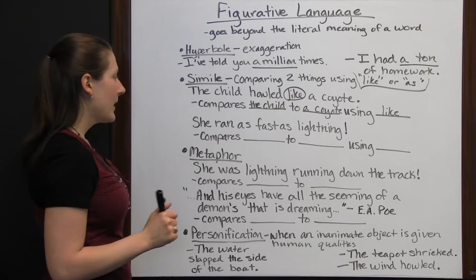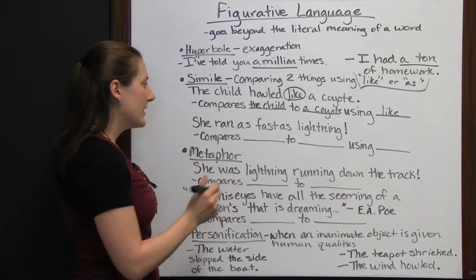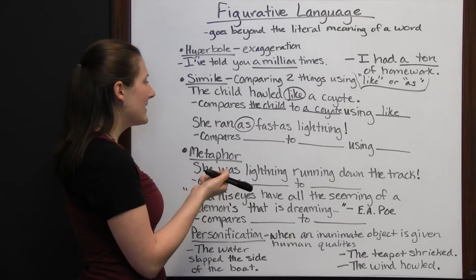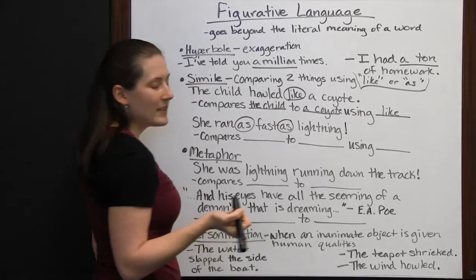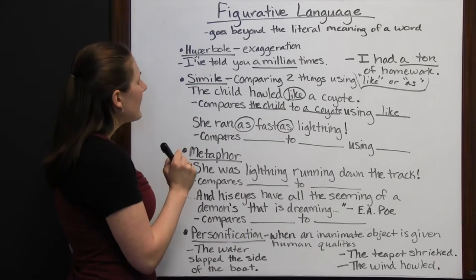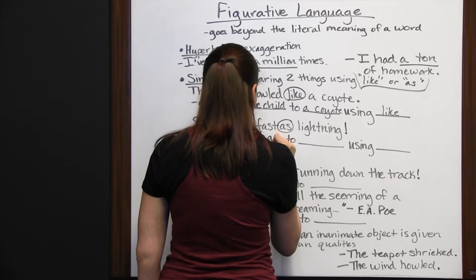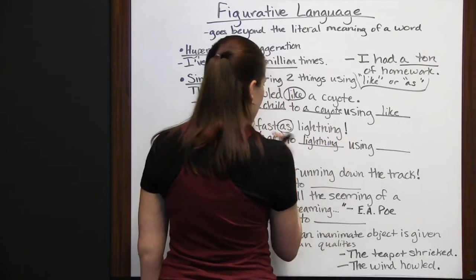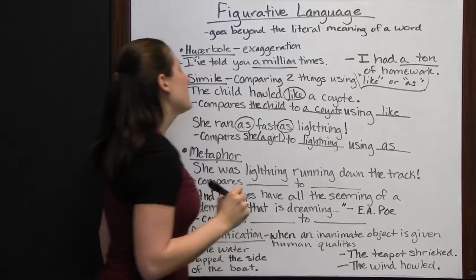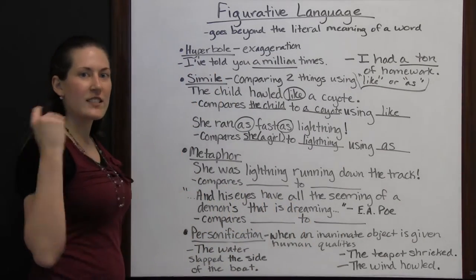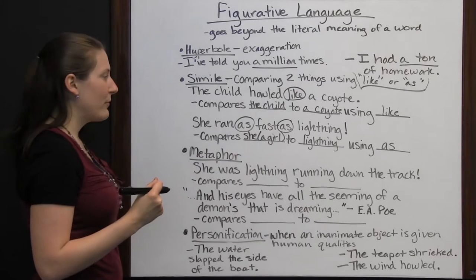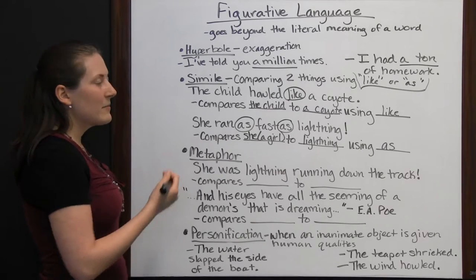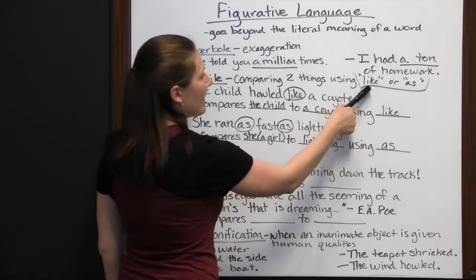Let's look at another example: "She ran as fast as lightning." That's going to compare two things, and we see the word as. It's comparing she, or a girl, to lightning — done by using the word as. When you're comparing a girl to lightning, you're saying she's that fast. So it's just letting you know she's really, really fast. That's what simile is: comparing two things using like or as.